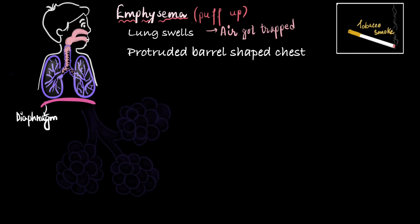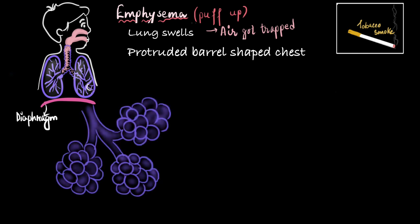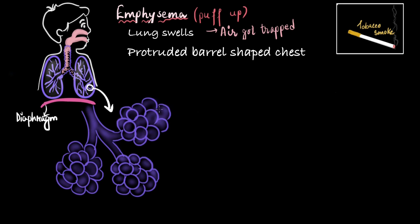For that, we will enlarge a part of the lungs. Let's say this part we enlarged. Now, let's just consider this to be the regular shape of alveoli.